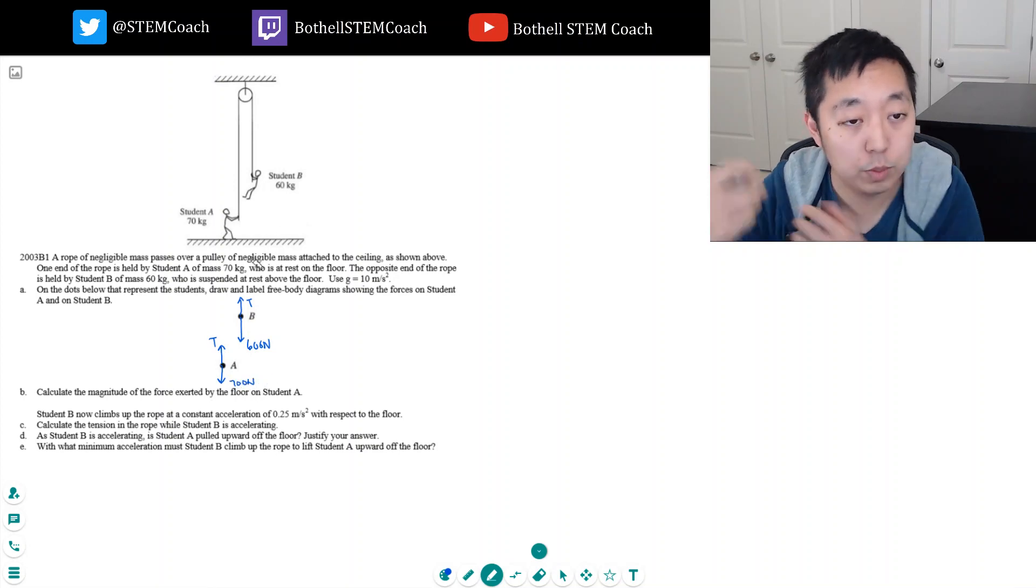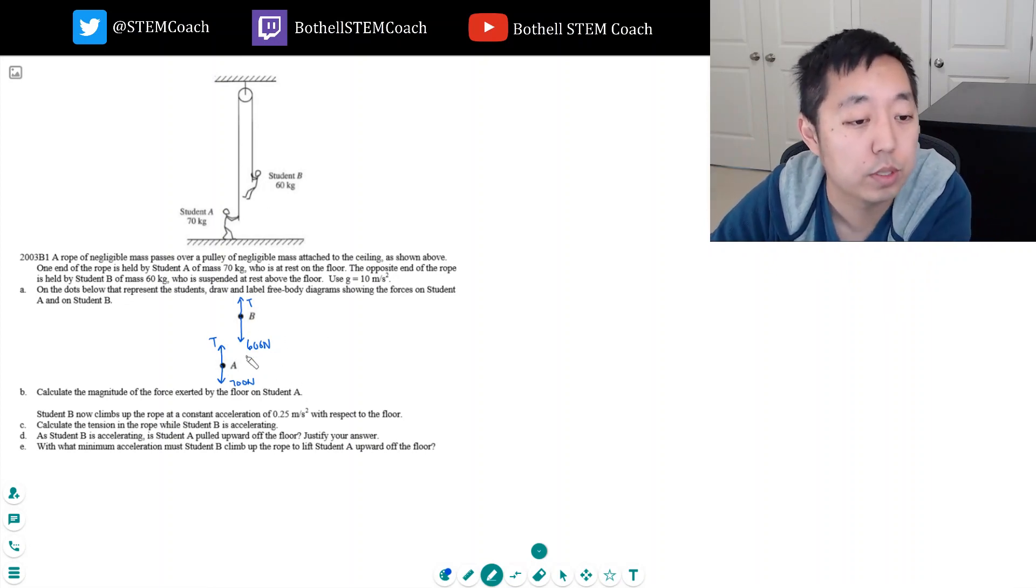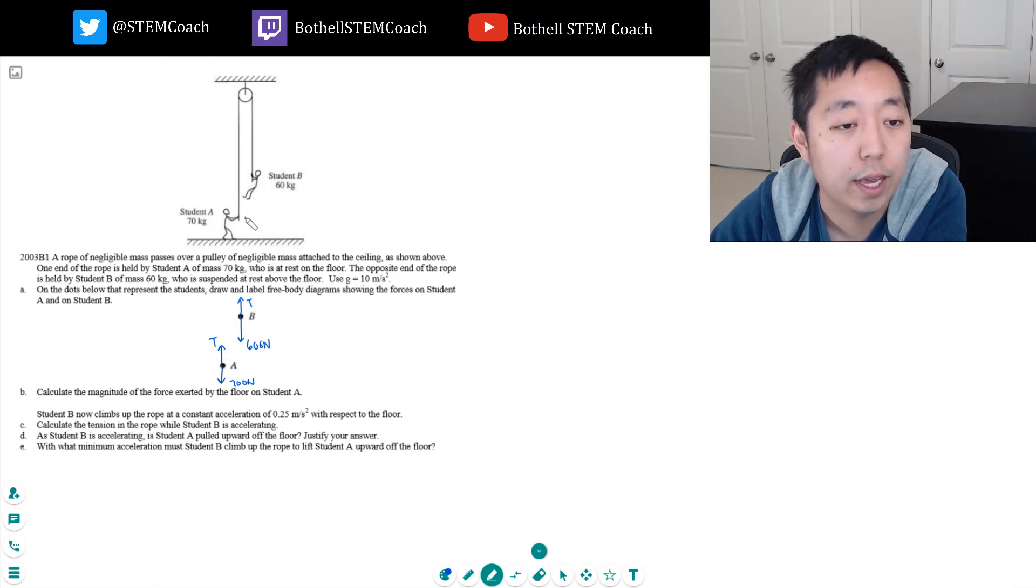Student A also has rope pulling him up and weight on him of 700 Newtons from gravity. There's nothing else acting on him. The rope's pulling on the student and gravity is pulling on the student. Both students. Calculate the magnitude of the force exerted by the floor. Oh yeah, he's standing here, so there's a normal force here.